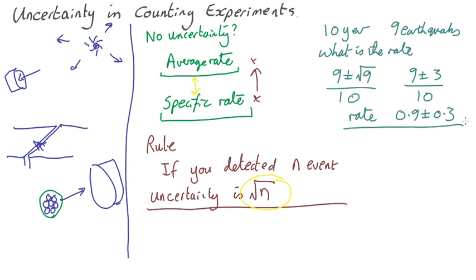Let's say you measured it for longer. Let's say you'd observed for 100 years and found 100 earthquakes. Now your rate is 100 plus or minus root 100 over 100, which is 1.0 plus or minus 0.1.